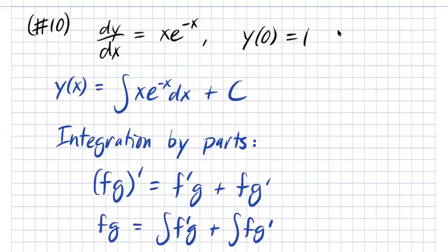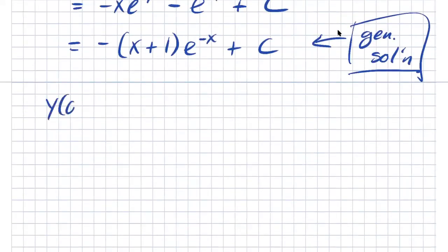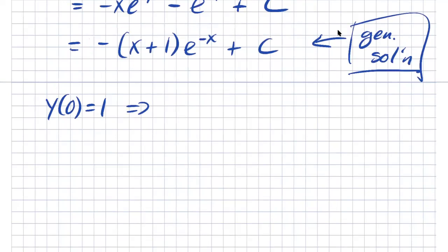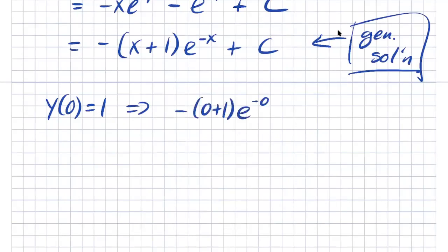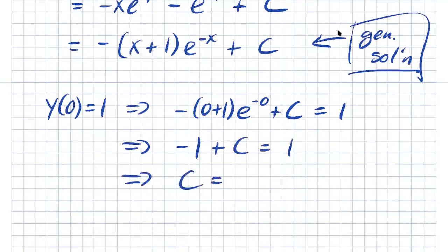The initial condition is y of 0 equals 1. Substituting into the general solution: (0 plus 1) times e to the negative 0 plus C equals 1. Simplifying: minus 1 times e to the 0, which is 1, gives minus 1 plus C equals 1. Therefore, C equals 2.